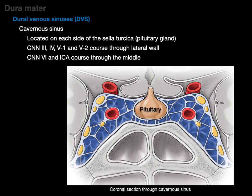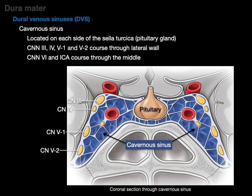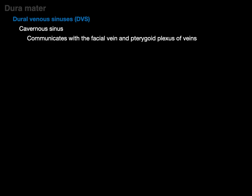Here's the pituitary gland, and this is a coronal section through the cavernous sinus. On either side of the pituitary gland is the cavernous sinus shown in blue. In the lateral wall are cranial nerves 3, 4, V1, and V2. In the middle of the cavernous sinus are cranial nerve 6 and the internal carotid artery. The cavernous sinus communicates with the facial vein and pterygoid plexus of veins, in addition to draining into the sigmoid sinus.